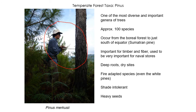Pines are super important for humans — for timber, fiber, and naval stores, meaning turpentine and wood preservatives. Pines are adapted to dry sites, can grow very deep roots, and are very fire-adapted. They're shade intolerant, so pines have to establish in sun — they can't grow in the understory, in the shade of other trees. They have heavy seeds, so they don't disperse too far.